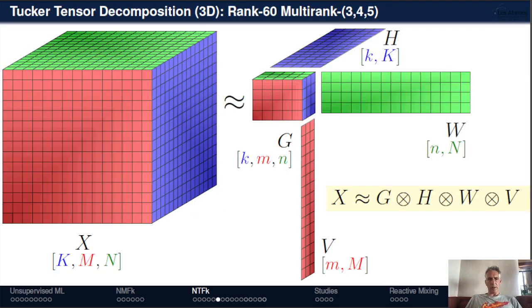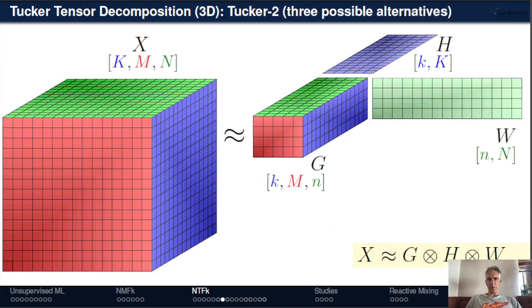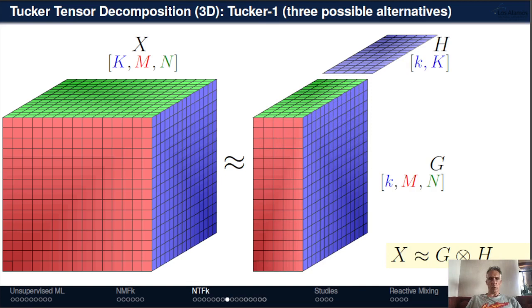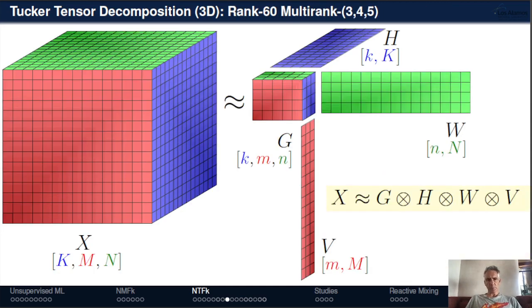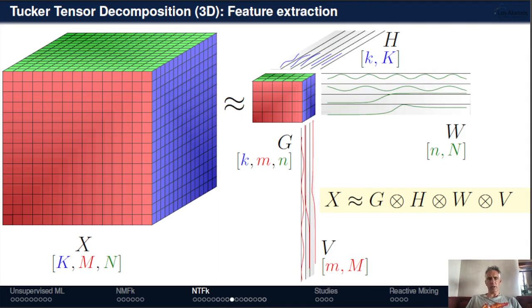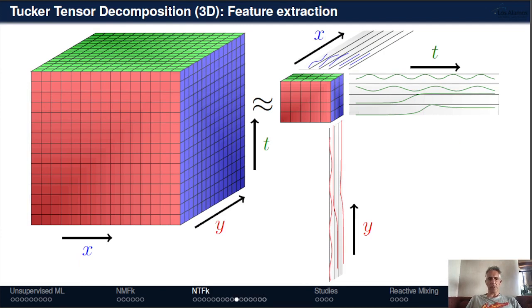Going back to Tucker decomposition — the general case has a core tensor and three matrices, but you can also decompose only two of the three dimensions, or only one dimension, which is mathematically equivalent to matrix factorization when tensors are flattened. Tucker decomposition can be thought of as an alternative to non-negative matrix factorization. You can also think of it as having signals in different directions — for example, in x, y, and t for 3D space-time, different features represent signals in each dimension.